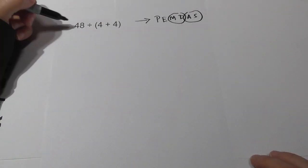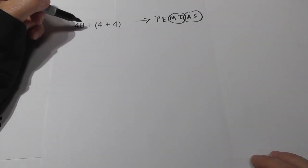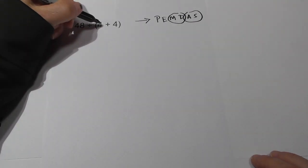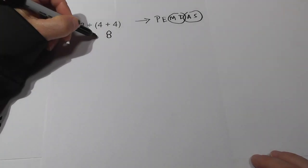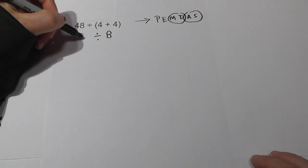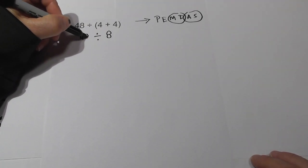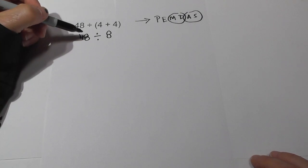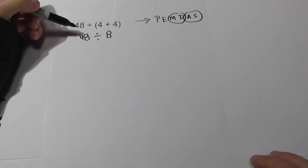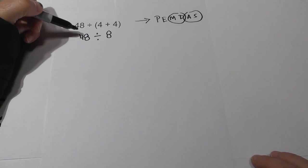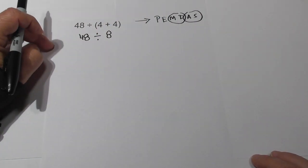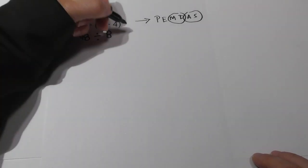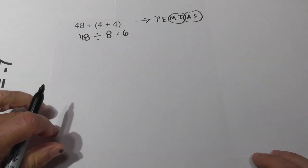Working left to right — yes, we have parenthesis, so 4 plus 4 is 8. Bring down the rest of the problem. Now no parenthesis, no exponents, no multiplication, but we have division — remember they are linked together. So 48 divided by 8 is 6.